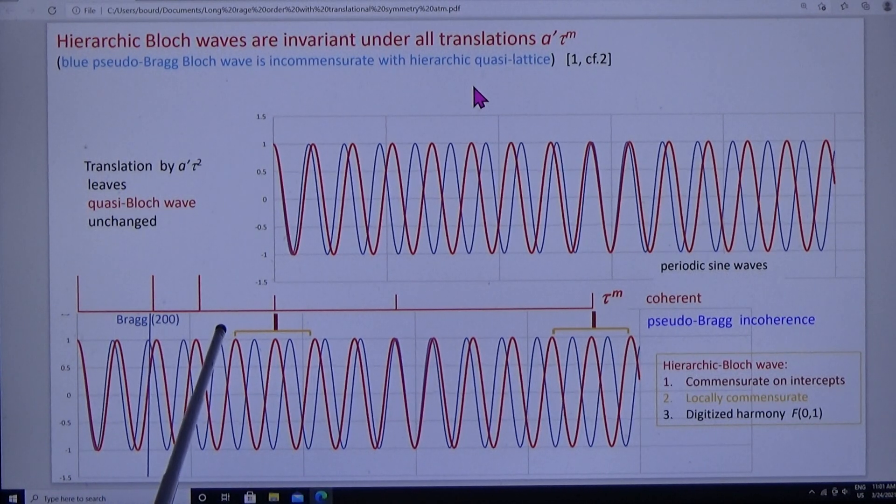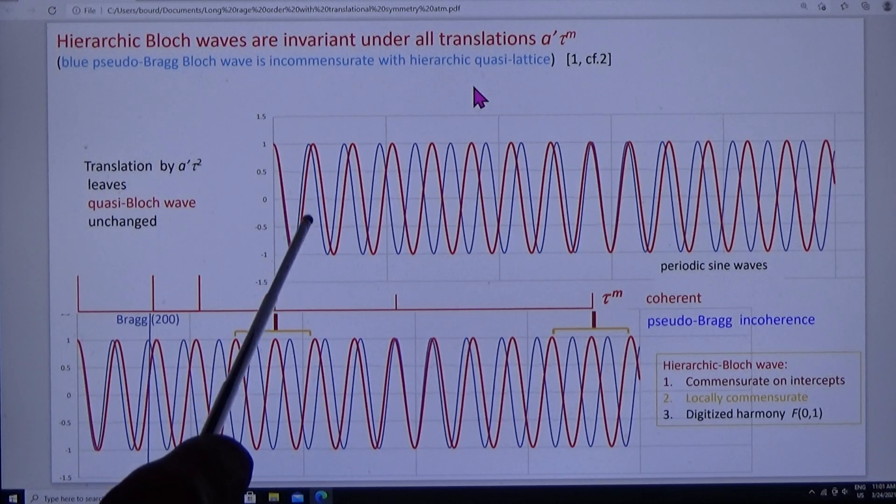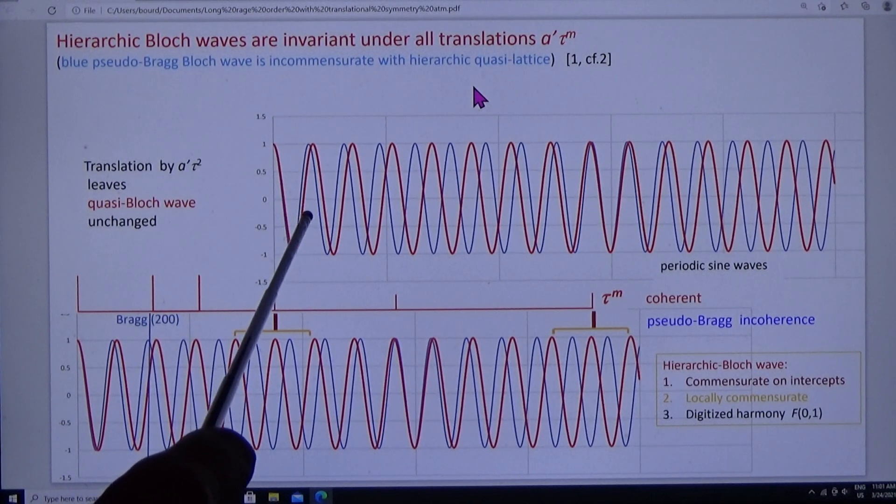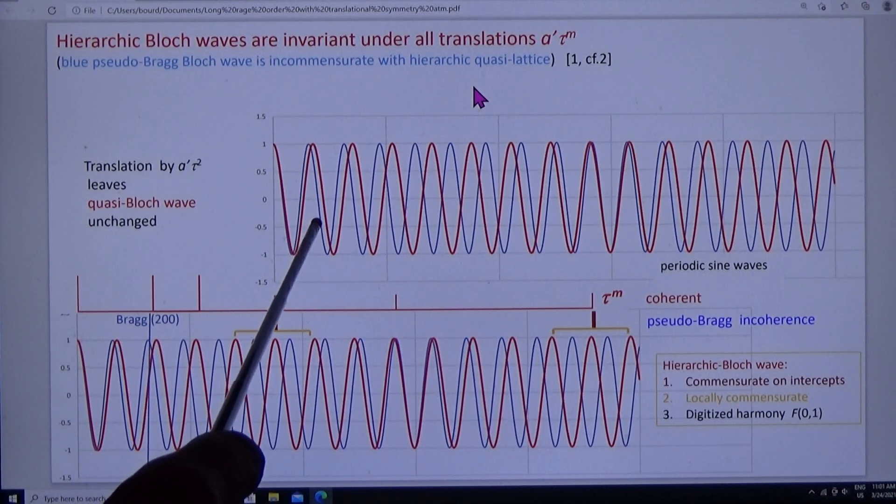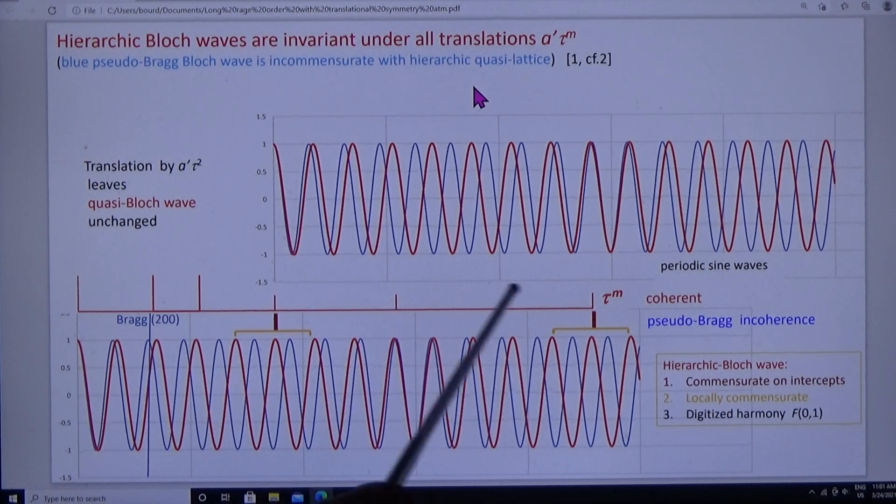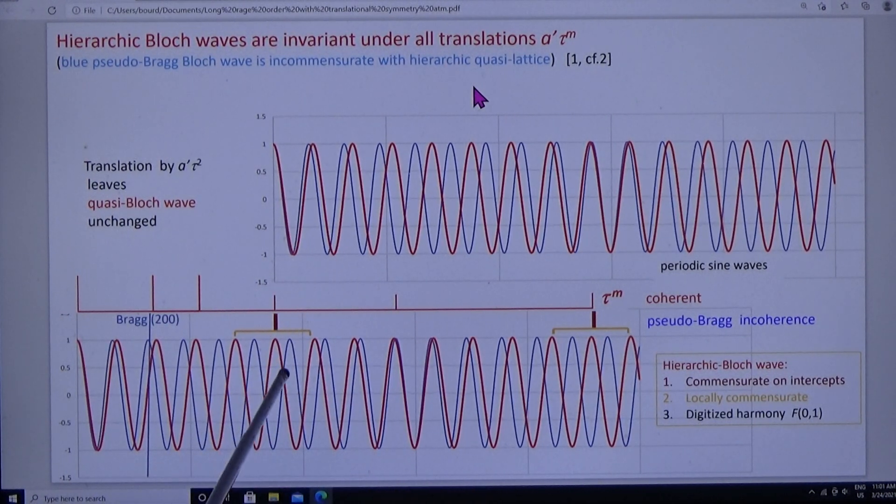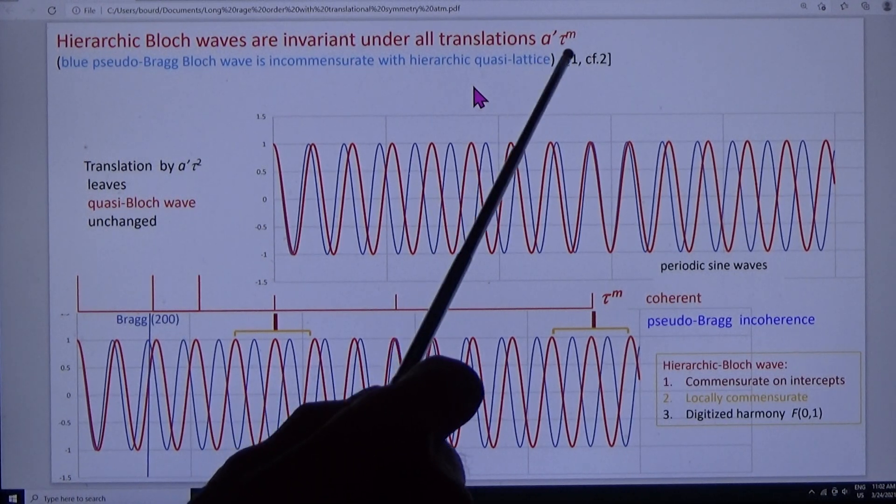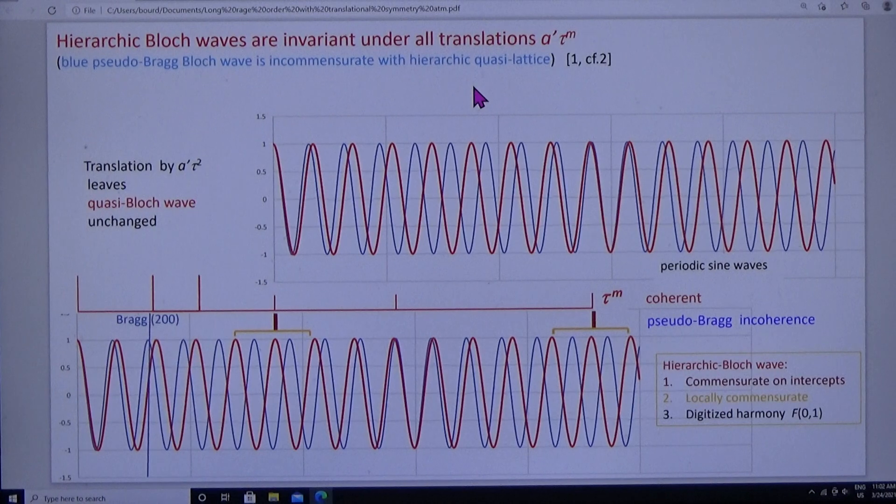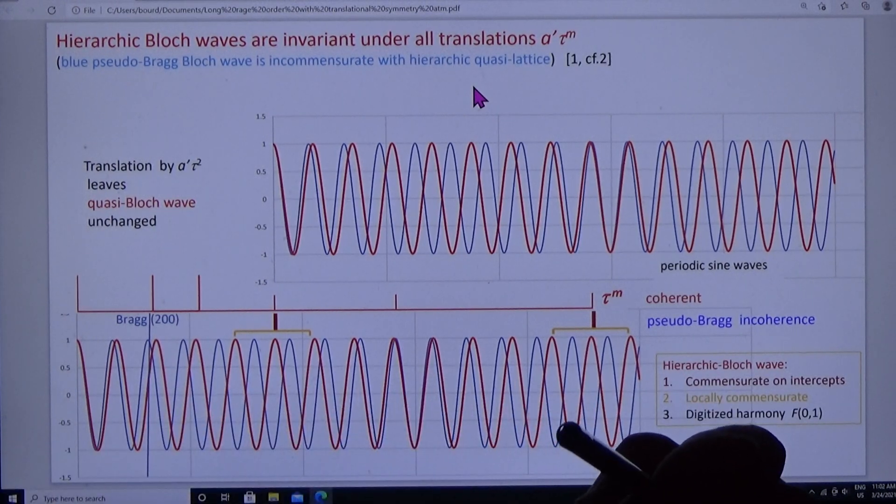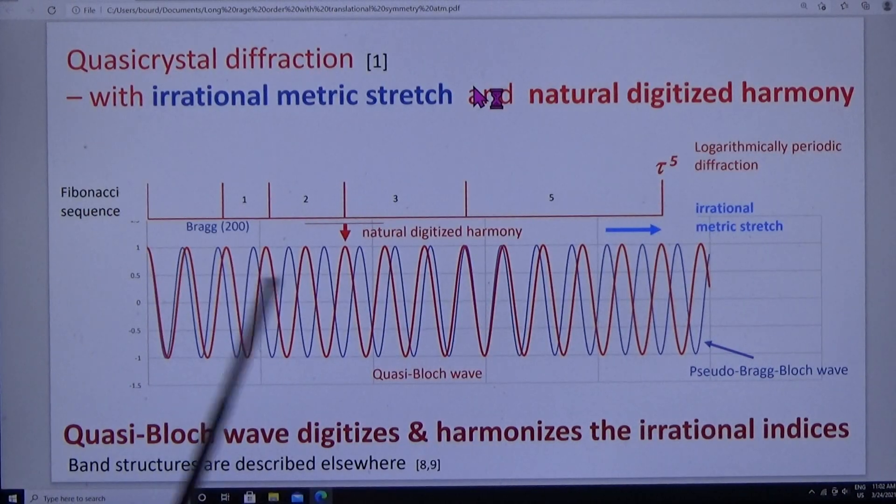And it has some further important properties. But first, let me point out that it is translationally symmetrical about these intercepts. The red wave is invariant under all translations, a tau to the power m.